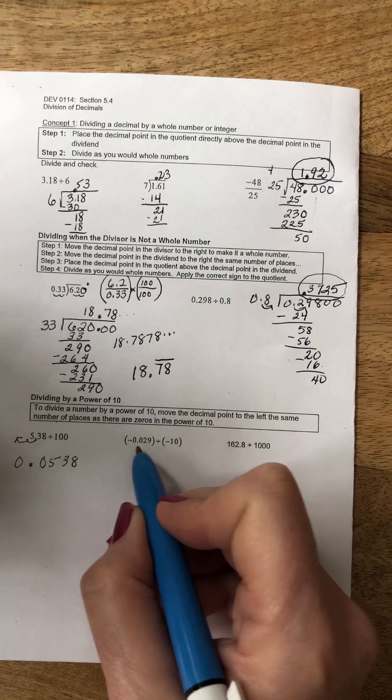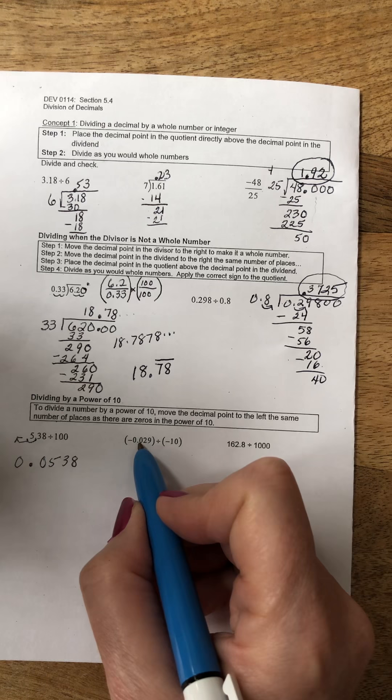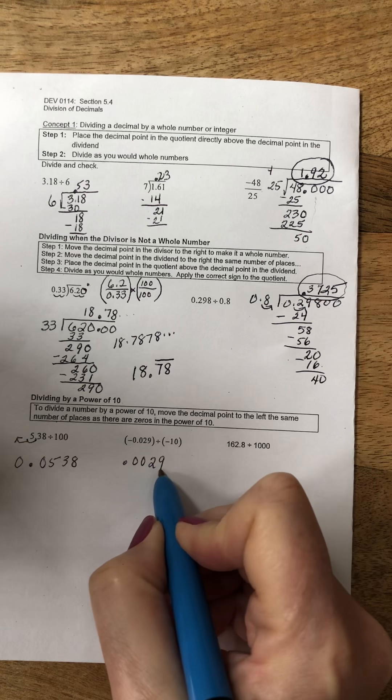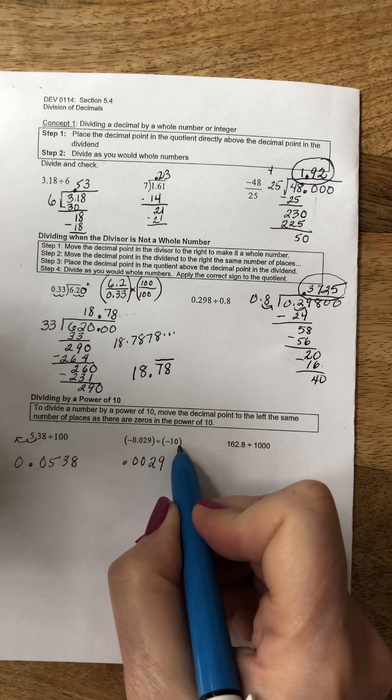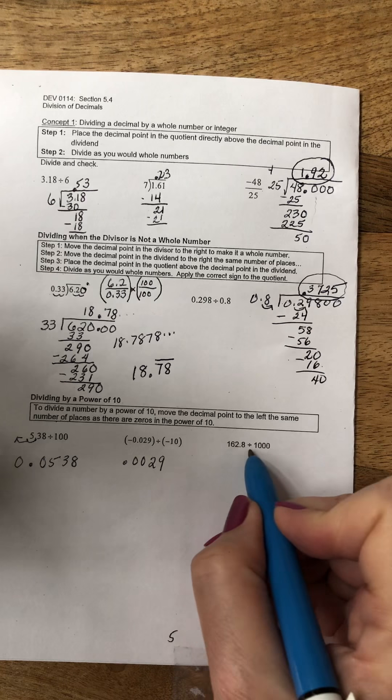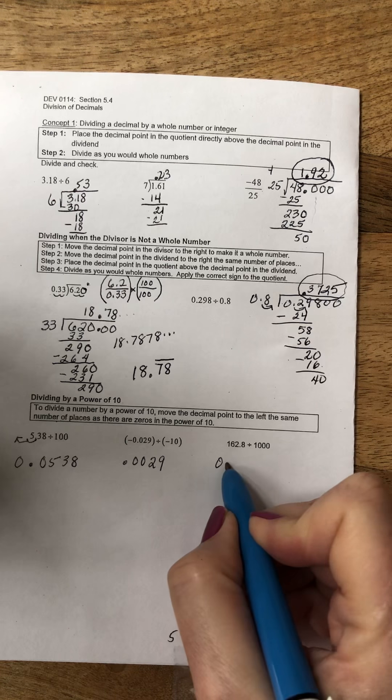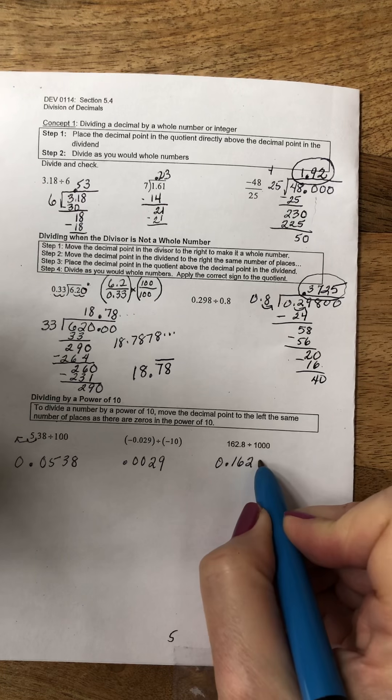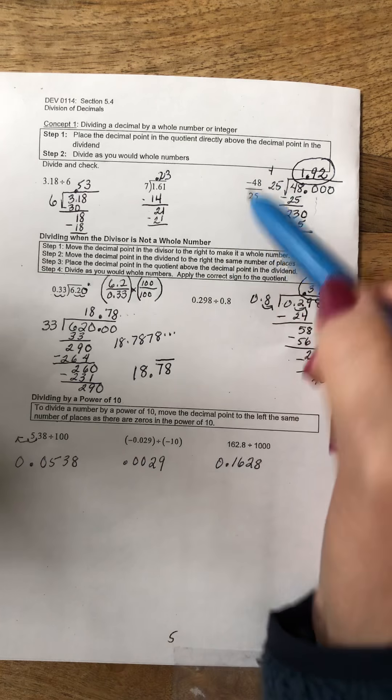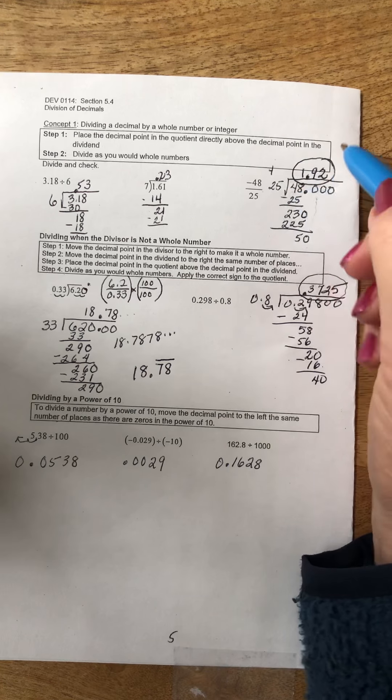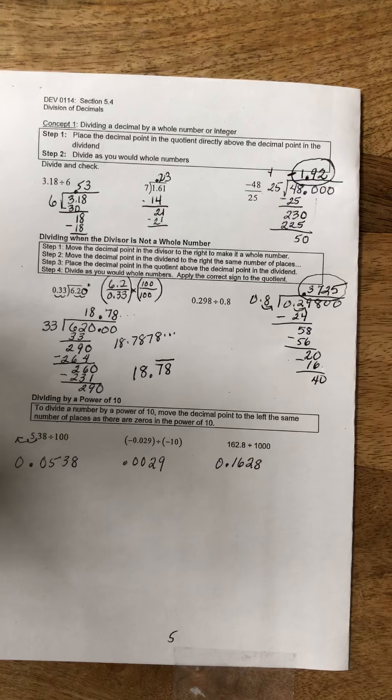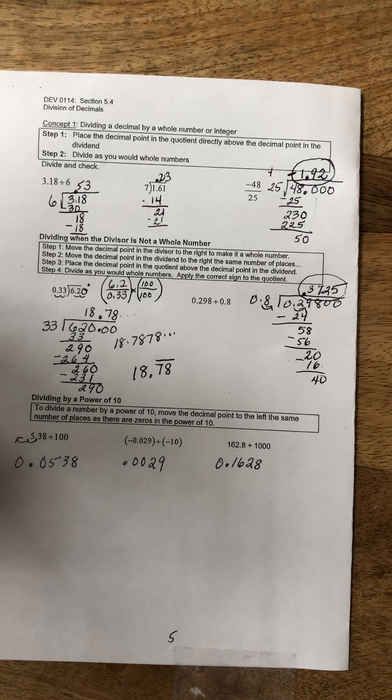Here I'm dividing by 10, so I'm going to move my decimal point one place to the left, so I have 0.0029. Negative divided by negative is a positive. Here I'm moving three places to the left at 0.1628. I just recognize that back up here my quotient was negative and I forgot to put that there. That's it for 5.4.